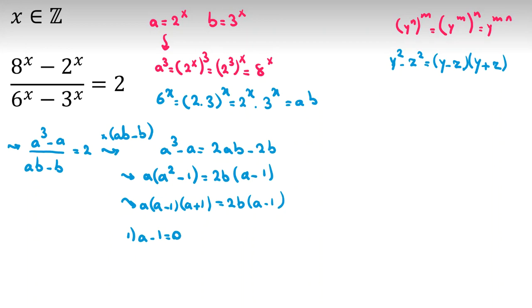If a minus 1 is 0, we can't cancel from both sides, but we conclude a is 1. a is what? 2 to the x. 2 to the x is 1, so x is 0. If we replace x with 0, the denominator will be 0, so it's a contradiction, impossible.